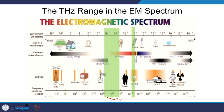Terahertz means 10 to the power 12. So the frequency here is on the order of 10¹² per second, and in terms of wavelength it will be 10⁻³ to 10⁻⁴ meters. You can see that this lies somewhere in the middle of microwaves and infrared.